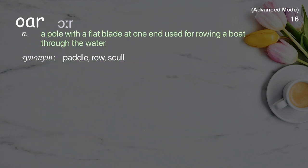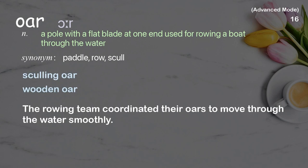Oar: A pole with a flat blade at one end used for rowing a boat through the water. Examples: sculling oar, wooden oar. The rowing team coordinated their oars to move through the water smoothly.